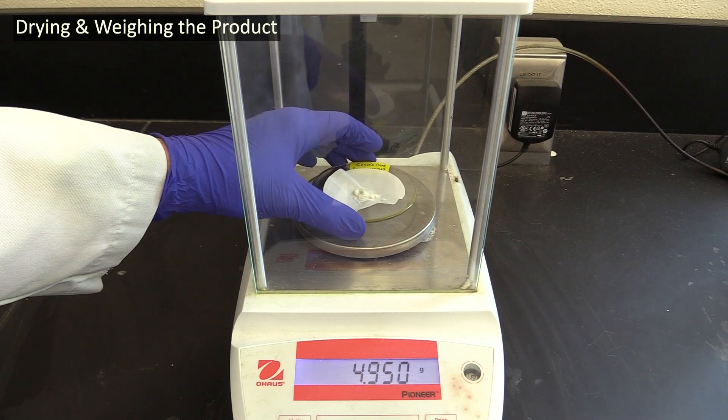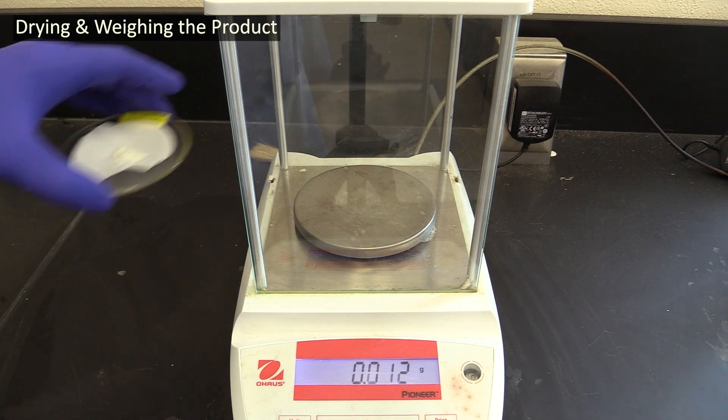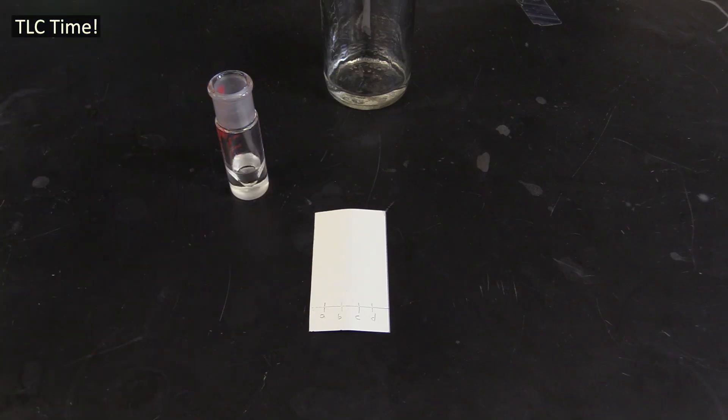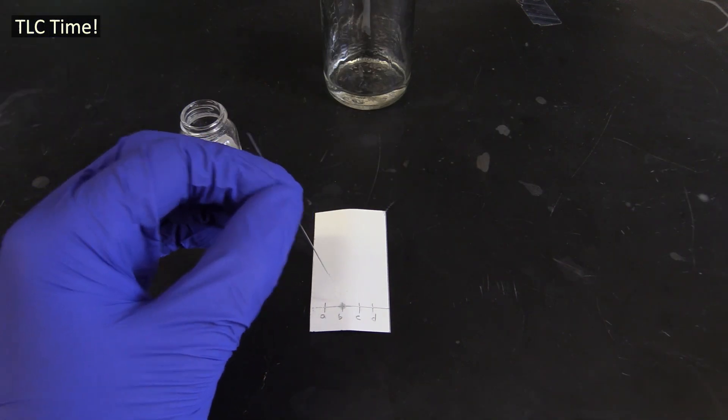In a subsequent lab period, you will weigh your product so you can calculate its yield. Coming back to the leftover product you dissolved in DCM, you will use TLC to analyze this product and compare it to known samples of the three isomers of methyl nitrobenzoate.